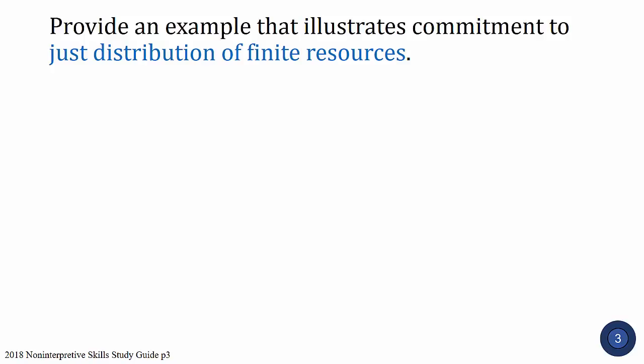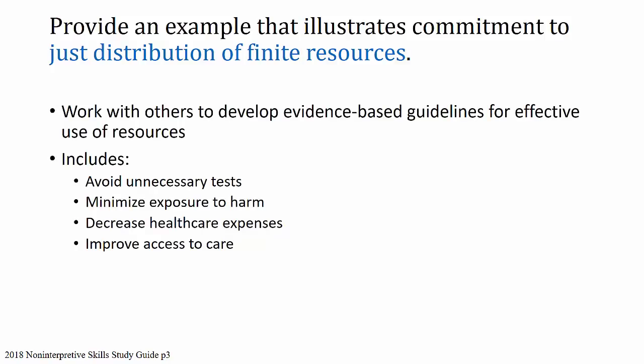Commitment to just distribution of finite resources means working with others to develop evidence-based guidelines for effective use of resources. We have only so much to work with, and it must be used appropriately for those who need it — avoiding unnecessary tests, minimizing harm from over-testing, and decreasing healthcare expenses. An illustration might be discovering you're over-ordering CTPAs for questioned pulmonary embolism and working collaboratively to reduce those inappropriate tests.